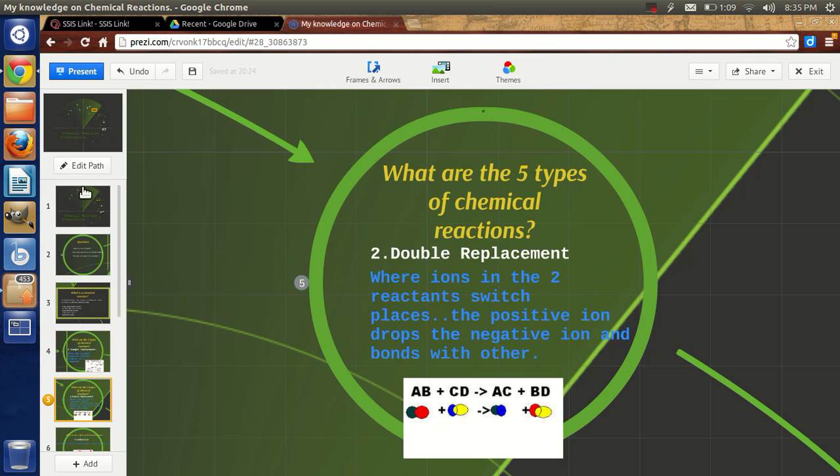Second of all, double replacement. Double replacement is where ions of the two reactants switch places. The positive ion drops the negative ion and bonds with other. Here you can see the example.